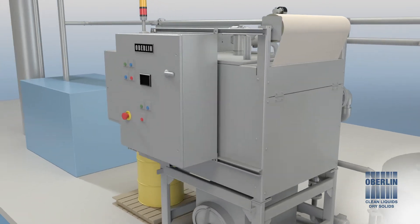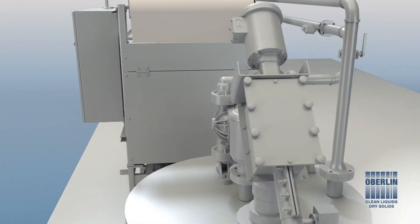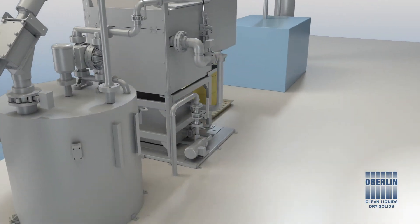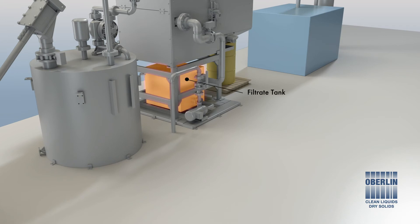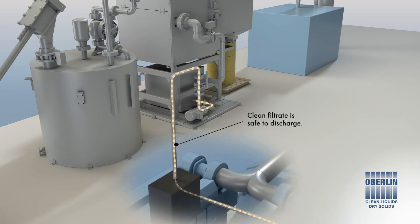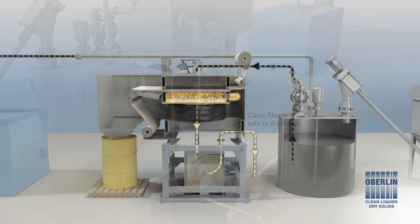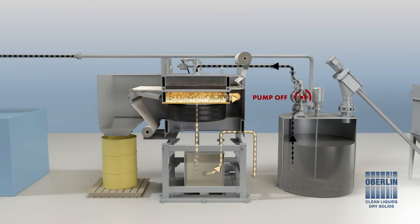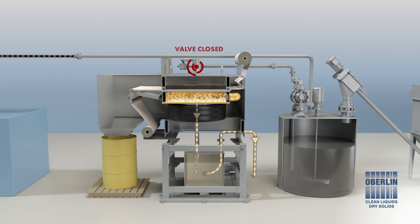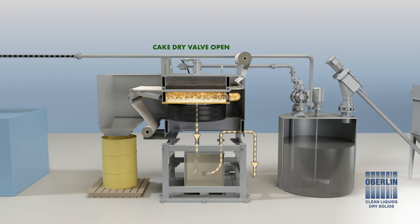Filtrate passes from the lower chamber and is collected in the filtrate tank. The clean filtrate is pumped to the existing sample analysis panel. Once the pressure inside the chamber has reached a set point, the filtering cycle ends and the drying cycle begins.